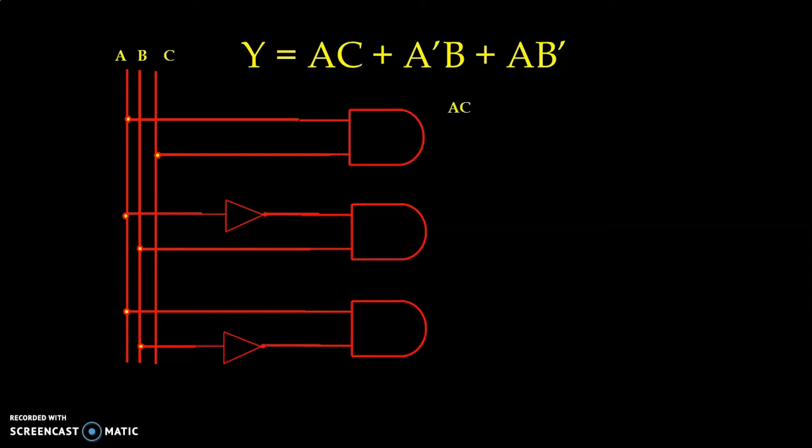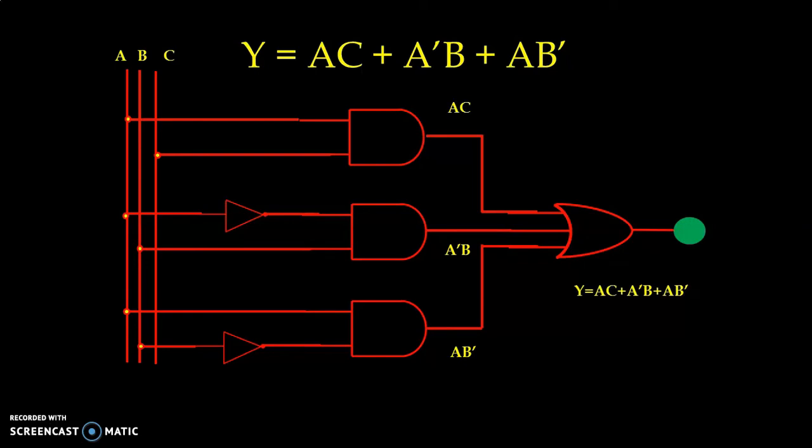If we check final product terms of each AND gate, then we have AC, A bar B, and AB bar. Now our function is SOP, sum of product. We have prepared product. So now for the sum term, we use OR operation and we use OR gate. So we have used one OR gate with three inputs. And we connect output of the AND gates to the input of the OR gate. And we take output of the OR gate. And that is finally AC plus A bar B plus AB bar.